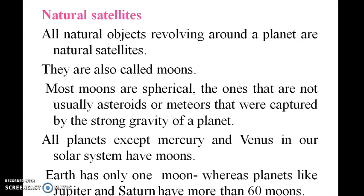All planets except Mercury and Venus in our solar system have a moon. The Earth has only one moon, whereas planets like Jupiter and Saturn have more than 60 moons.